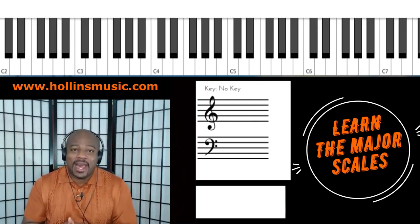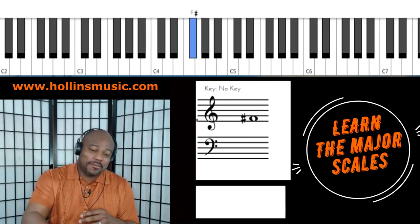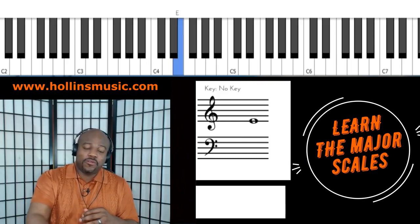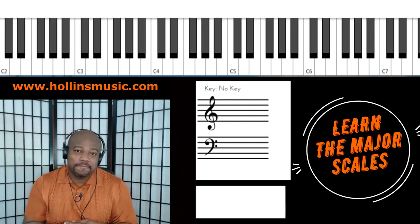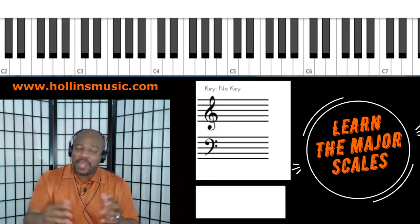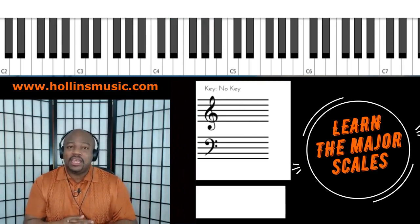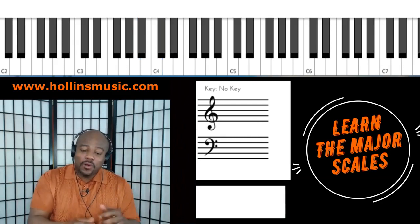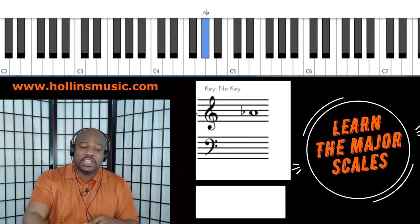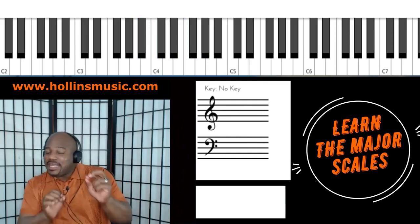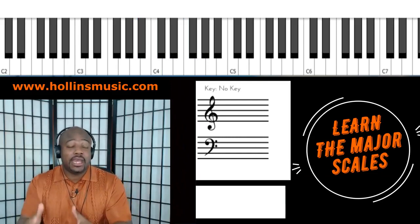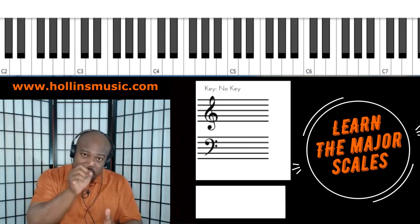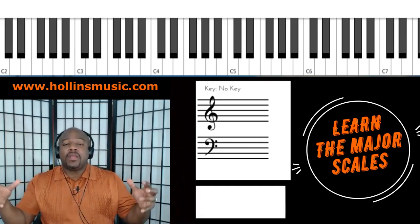In the key of B natural, what's number five? That's F sharp — one, two, three, four, five. What's number seven? That's A sharp — one, two, three, four, five, six, seven. What's four? That's E. Now let's go to the key of A. What's the fourth scale degree in the key of A? That's D — one, two, three, four. What's the seventh scale degree in the key of A? G sharp — one, two, three, four, five, six, seven. That's the way you need to know your major scales.